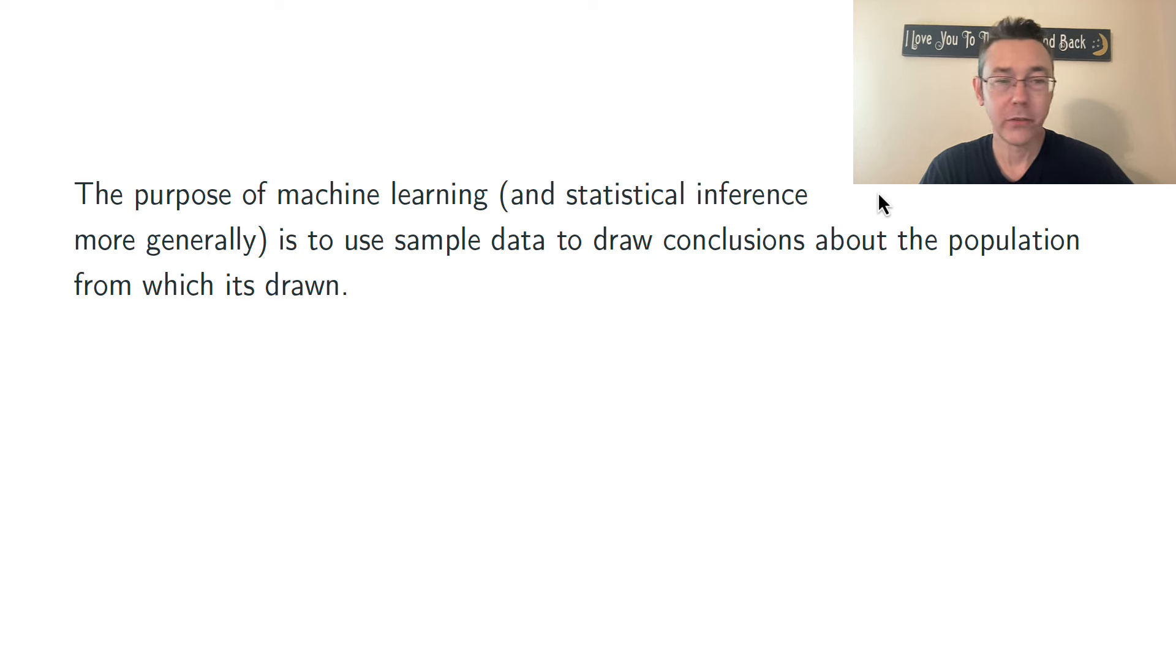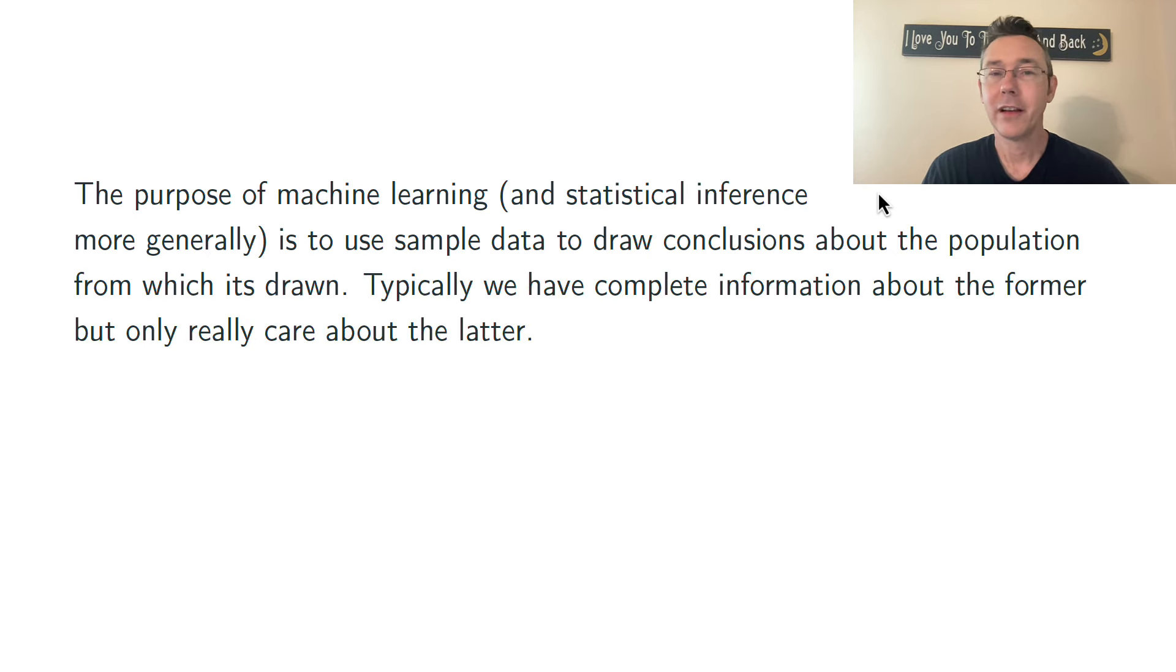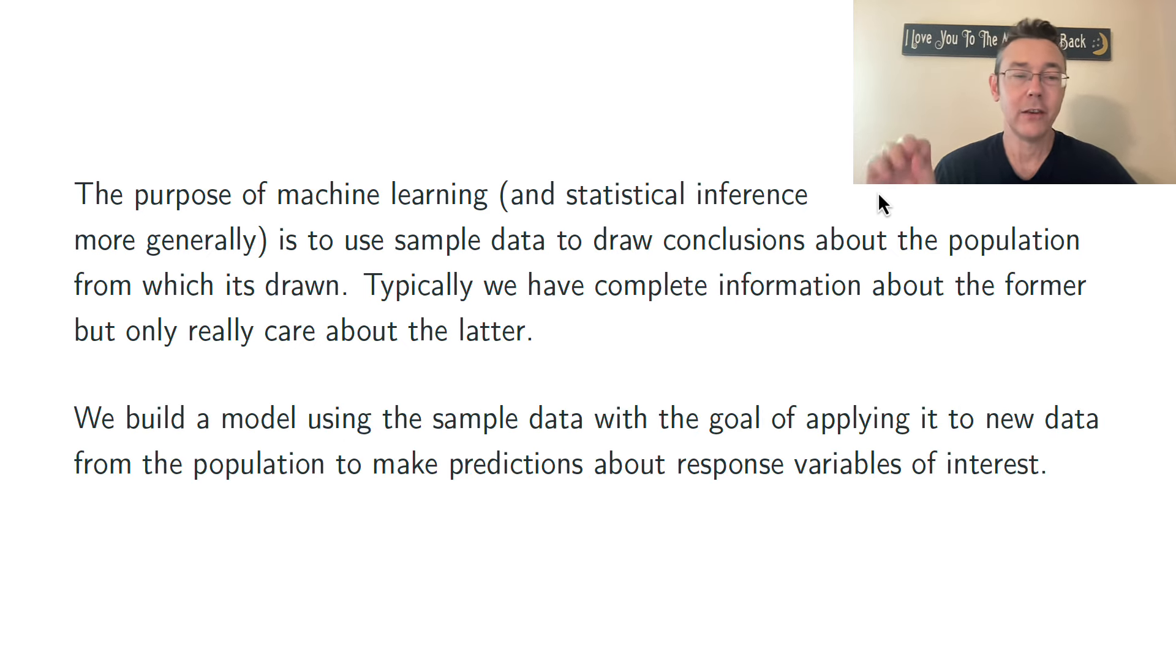The purpose of statistical inference and machine learning more generally is to draw conclusions about a population, about parameters, from sample data, from statistics. Typically we only care about the population, not about the sample. A lot of times the sample is randomly drawn. On the other hand, we only have information about the sample, not about the full population.